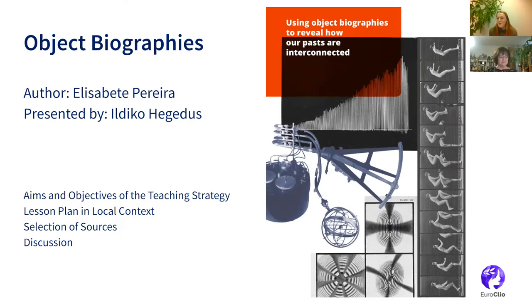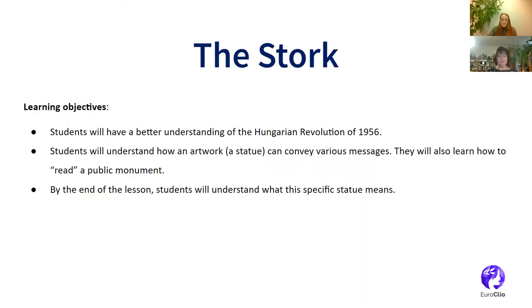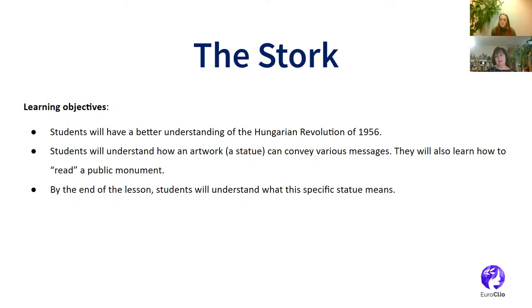Without further ado, I shall hand over the floor to Ildiko, who will explain her lesson plan. I'm going to talk about an object which is a public monument in my city called the Stork. The learning objectives are that students will have a better understanding of the Hungarian revolution of 1956, which is core material in Hungary. By using an artwork — a statue — students learn how it can convey various messages, and how to read a public monument, understanding the symbols used. By the end of the lesson, students will understand what this specific statue means.